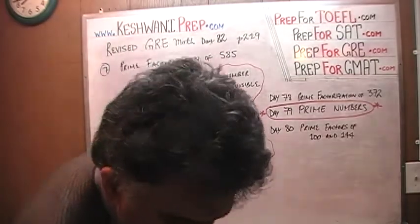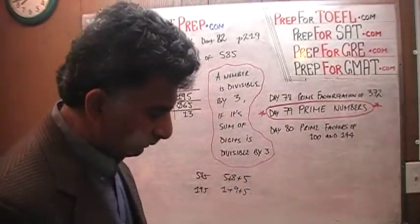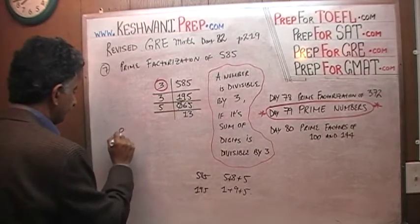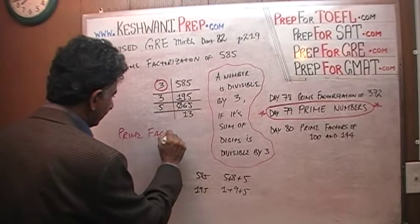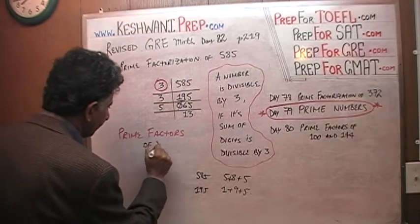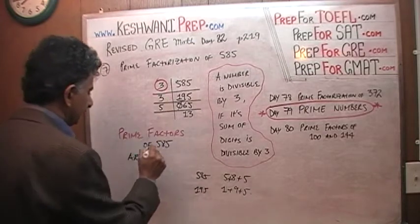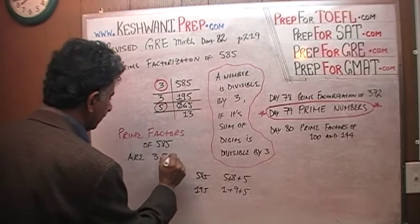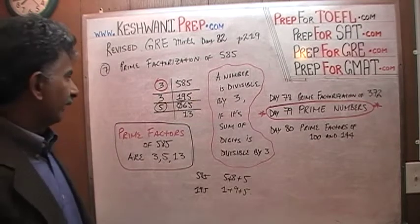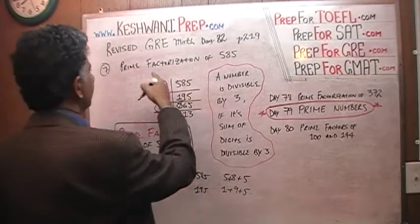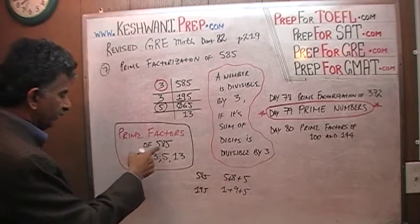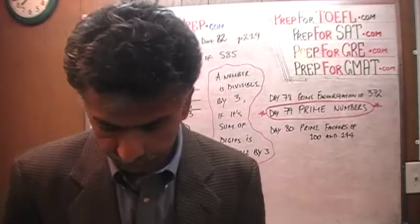That's it. So now our prime factors — we do not repeat anything that occurs more than once, we just list the unique numbers. The prime factors of 585 are 3, 5, and 13. That's it. 585, despite being such a large number, has only 3 prime factors: 3, 5, and 13.